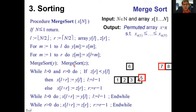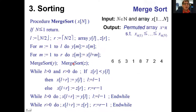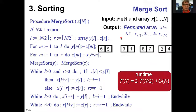You see the recursion working: first going all the way down to one-element arrays where nothing needs to be done, then merging back up. If sorting a one-element array, nothing is to be done; otherwise recurse. That's merge sort, and now we want to analyze its computational cost.